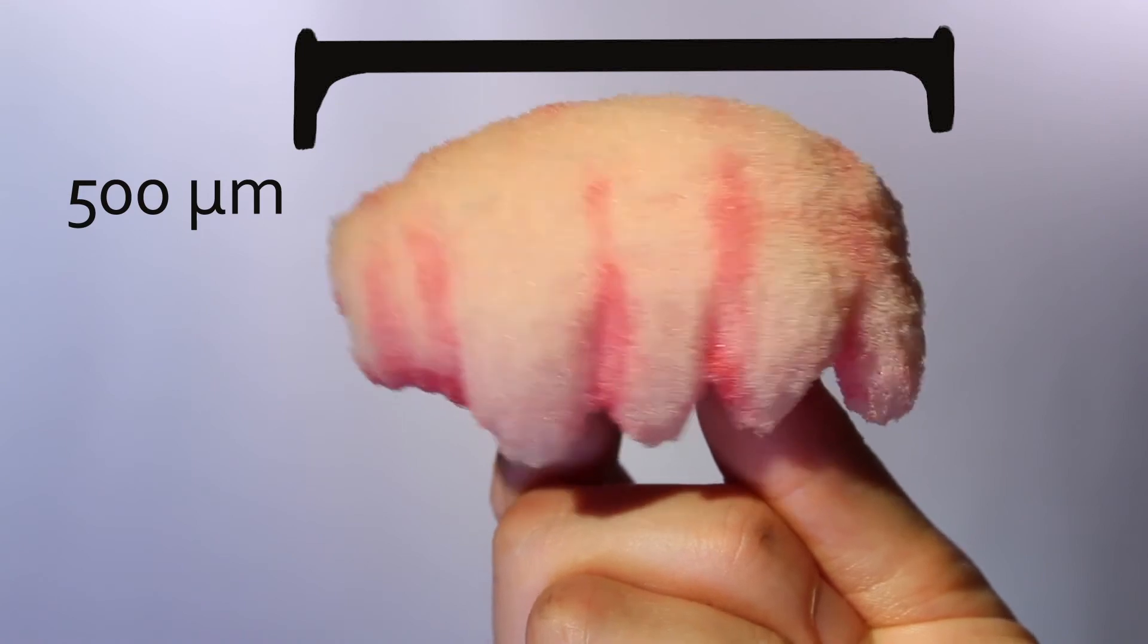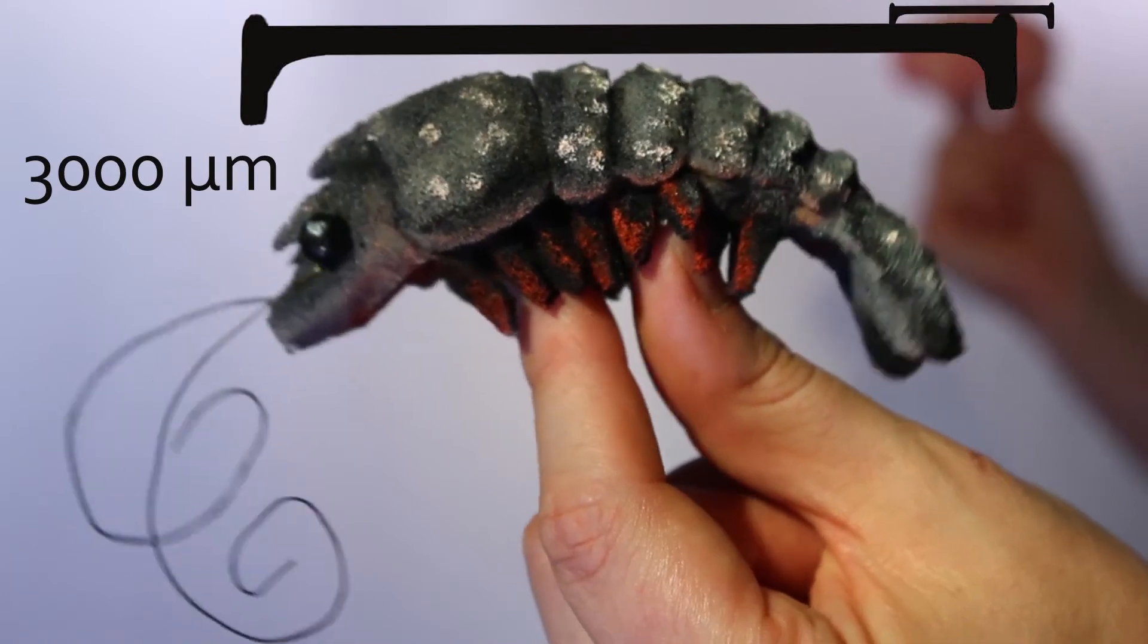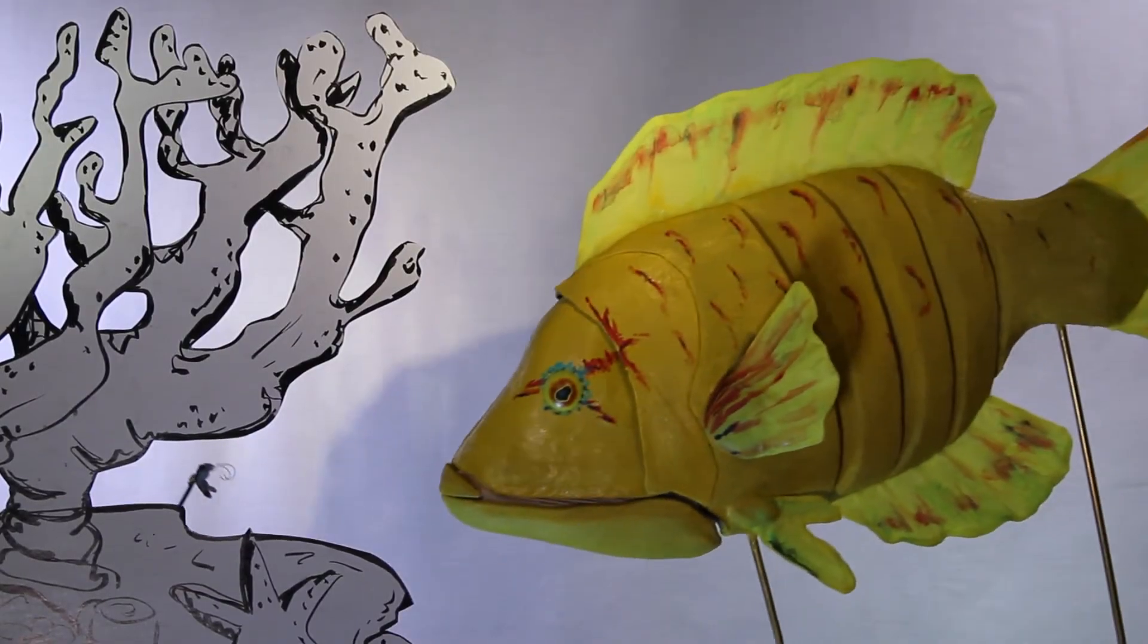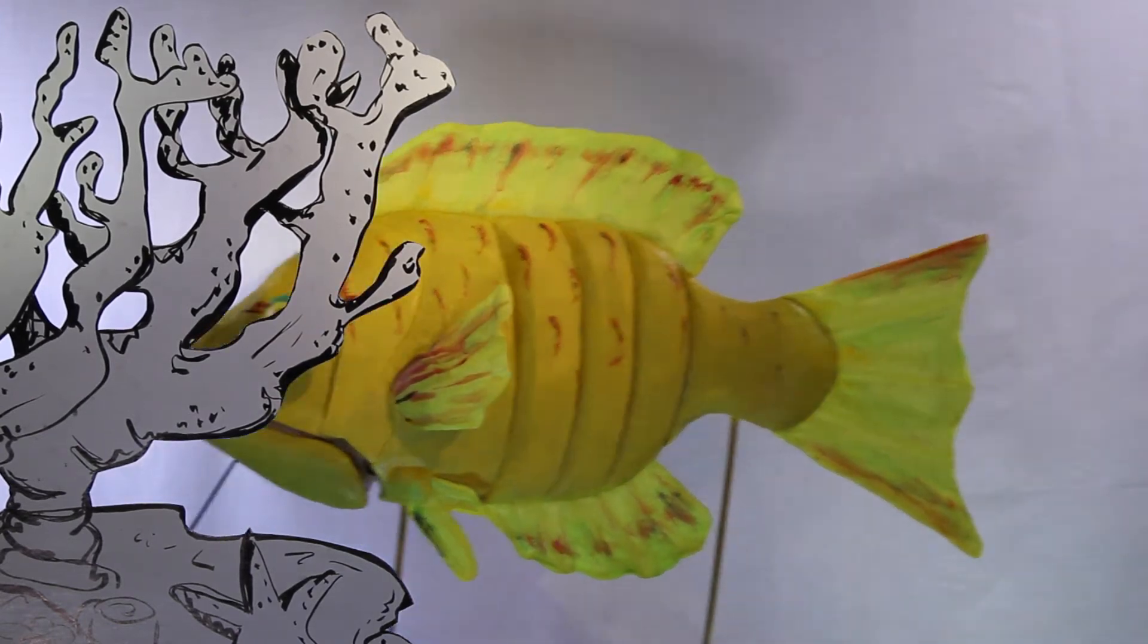You see, the sling jaw likes to eat tiny, tiny things. Not quite that tiny. Back it up just a bit. And tiny, tiny things are pretty dang good at hiding, until someone with a highly protrusible jaw comes along.